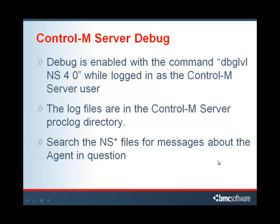On the Control-M server side, debug is enabled with the command: dbglvl NS 4 and 0, then hit return. This will enable debug of the NS process, showing messages going back and forth from the agents. The log files are in the Control-M server proc log directory, which is under the agent home directory. The files for the NS process start with capital N, capital S. Search these files for messages about the agent in question. Make sure there aren't any messages like 'get host by name failed' or 'communication timeout failed,' and if there are, correct that and it should correct the problem.